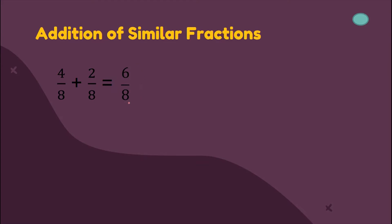But let us look at our answer here. Can we still simplify six over eight? Is there a number that can divide six and eight? The answer is yes. Six and eight can still be divided by two. So we can simplify six over eight by dividing the numerator and denominator by two: six divided by two is three, and eight divided by two is four. So our answer is three-fourths. Always remember that we need to put our answer in lowest term.